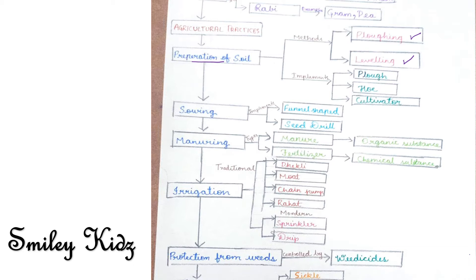Now let's talk about leveling. The plowed field may have many big pieces of soil called crumbs. It is necessary to break these crumbs with a leveler. The field is leveled for sowing as well as for irrigation purposes. The agricultural implements used in the preparation of soil are plow, hoe, and cultivator.